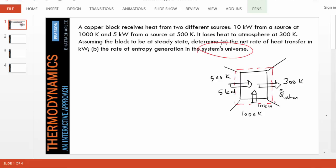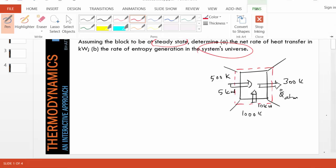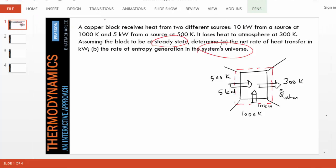So we have to find the net rate of heat transfer, that is Q dot, which is the sum of all these three and the entropy generation rate. And also an important piece of information is provided: the system is at steady state, so that simplifies the problem quite a bit.